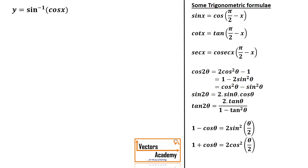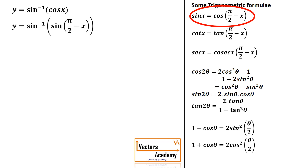The first question is sine inverse of cos x. To cancel out sine inverse inside the bracket, I need sine x. To convert cos into sine, you can see the first formula: sine can be converted into cos by subtracting the angle by π/2. Exactly in the same way, cos can be converted into sine by subtracting the angle by π/2.